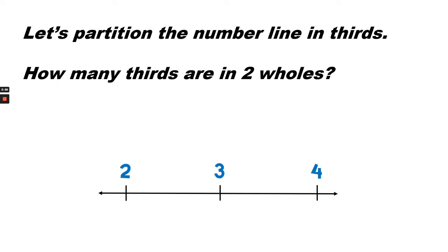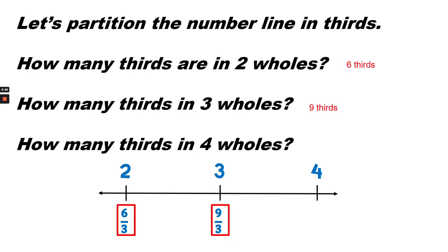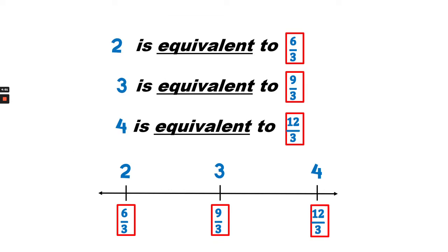Let's partition the number line into thirds. How many thirds are in two wholes? Remember, in one whole there will be three thirds. So how many thirds are in two wholes? Six thirds. How many thirds are in three wholes? Nine thirds. How many thirds are in four wholes? Twelve thirds. So two is equivalent to six thirds, three is equivalent to nine thirds, and four is equivalent to twelve thirds. That means they're at the same place on the number line.